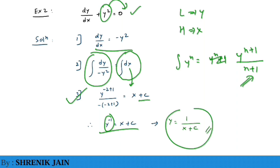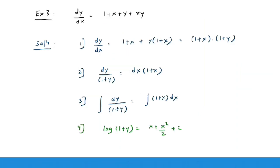That was a pretty simple question if you know the steps correctly. Now example number 3 is more interesting: dy/dx = 1 + x + y + xy. Your first step is to separate the variables, but it seems impossible to separate them directly.